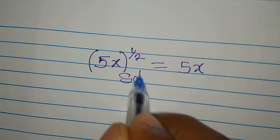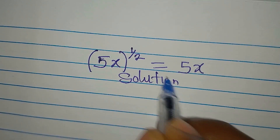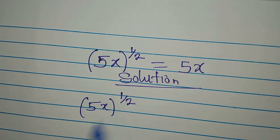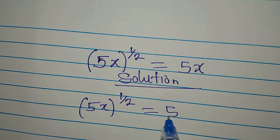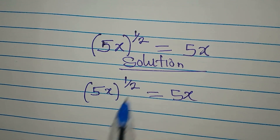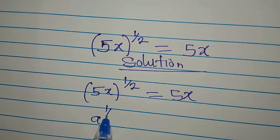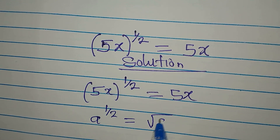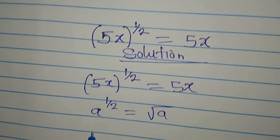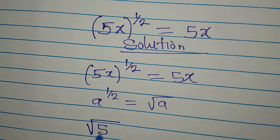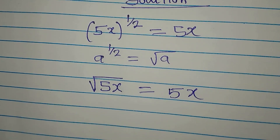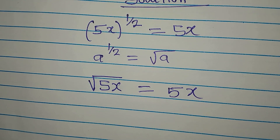Hello everyone. How do we solve this problem? We have 5x to the power of 1 over 2 equals 5x. This looks impossible but it is not. If you have a to the power of 1 over 2, it is the same thing as the square root of a, according to one of the laws of indices. So this means we are looking for the square root of 5x on the left, equal to 5x on the right.